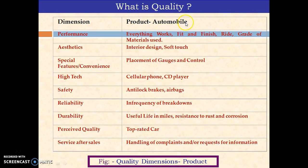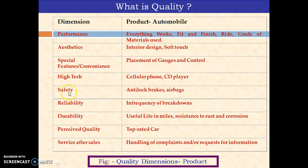If you take the same example — that is, the automobile — this quality characteristic has got different dimensions. Performance can be one dimension, evaluated in terms of fit and finish, ride, and the grade of metal used. As far as aesthetics is concerned for the customer, the quality dimension could be interior design. A special feature could be the placement of gauges and controls for passenger or driver. Reliability refers to frequency of breakdown being less. Durability refers to a useful period of time. Perceived quality could be a top-rated car — this is an implied kind of need that can be considered as a dimension for defining quality.